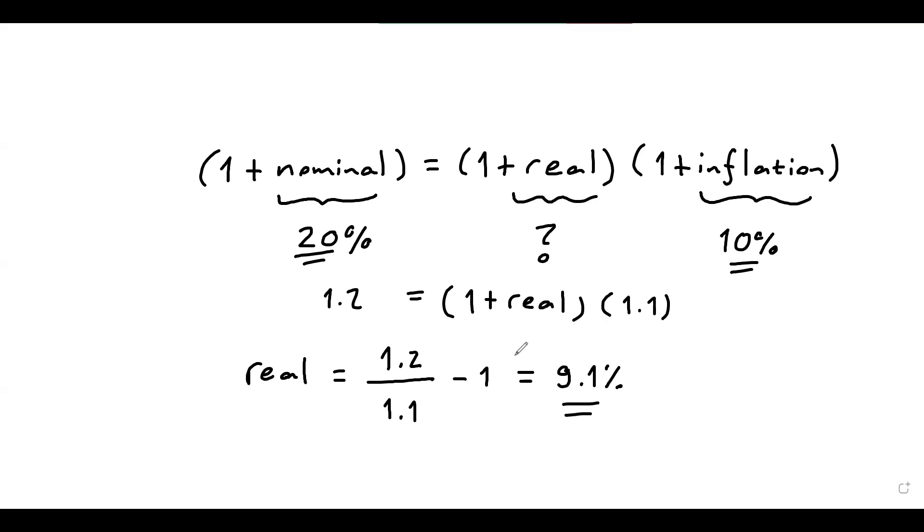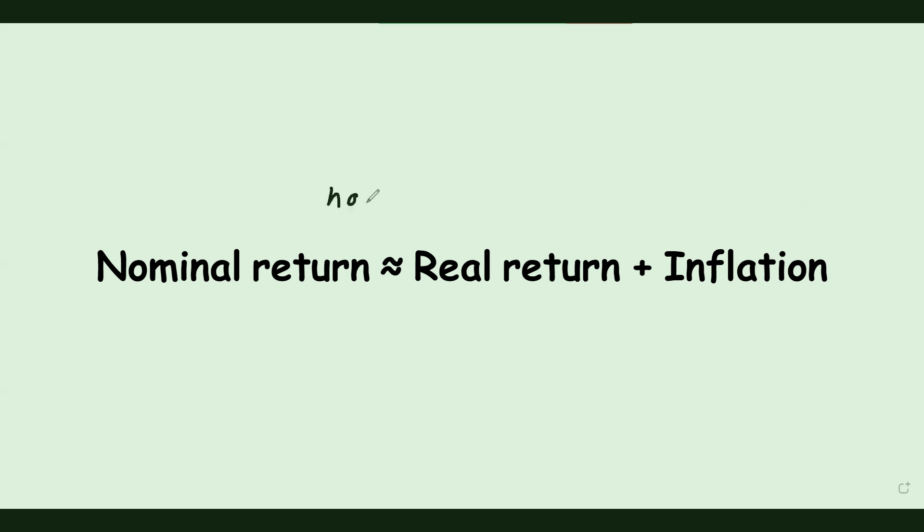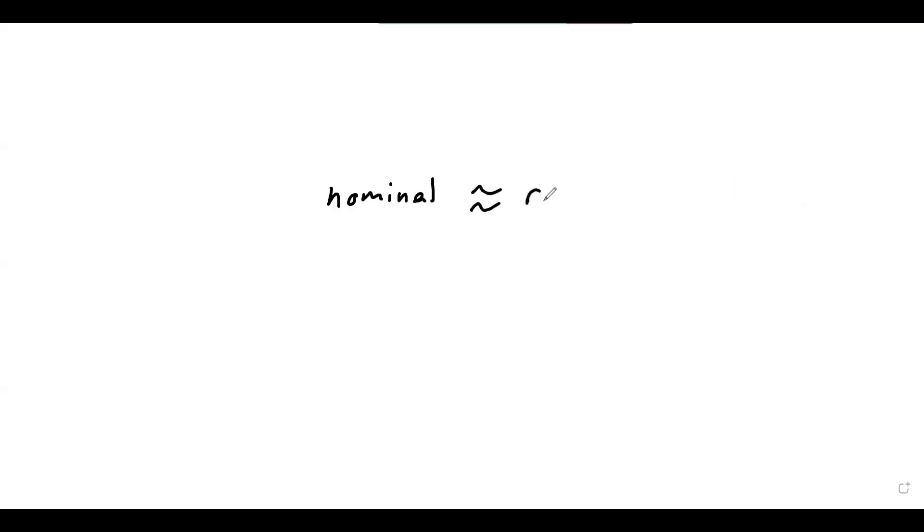There's one more thing I would like to emphasize here. There's actually a shortcut to this formula, which works especially when the rate of inflation and the nominal rates are low. So I just want to wrap up by showing that. And essentially, the approximate formula is like this. So nominal interest rate is approximately equal to the real interest rate plus the rate of inflation. In our example, the nominal rate was 20%. And the inflation was 10%. So if we just use this approximation, this means that the real rate is 10%.